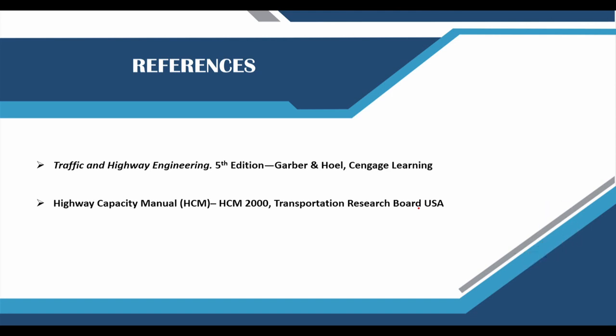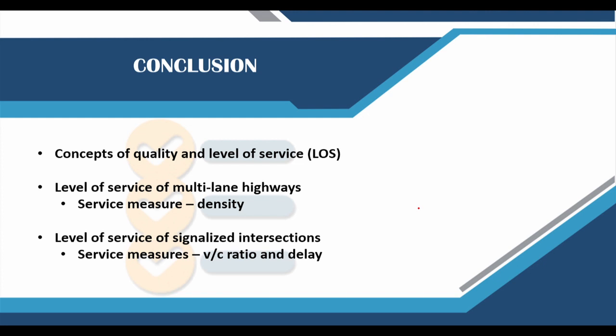That brings us to the end of this lecture. References for further understanding are provided; most of the lecture notes have been taken from the Garber and Hoel textbook or the Highway Capacity Manual. In conclusion, we have looked at the concept of quality and level of service, how they are integrated through service measures, and how level of service is calculated for vehicles on a multi-lane highway as well as on a signalized intersection. We looked at how density is calculated for multi-lane highways and how V/C ratio and delay are calculated at a signalized intersection.